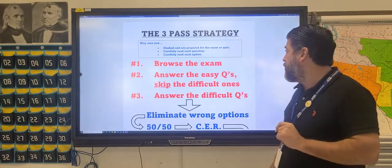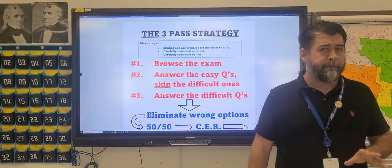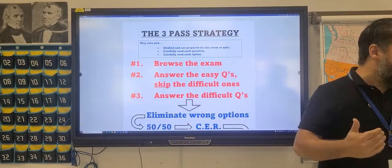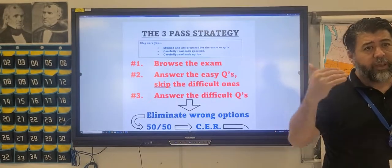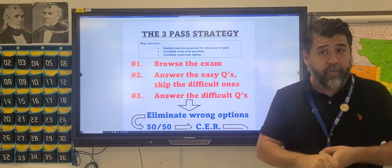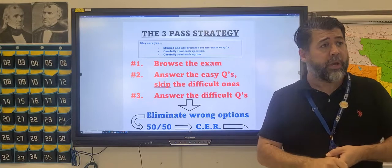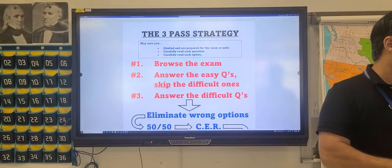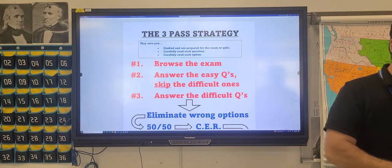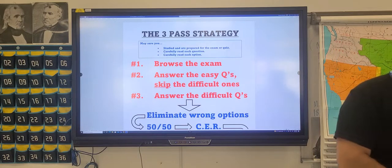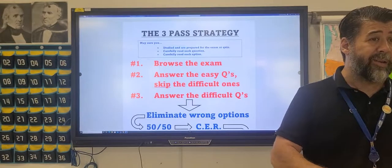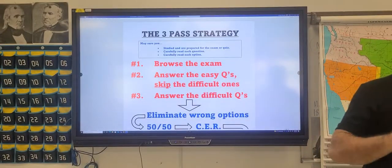So you've got a multiple choice exam in front of you, whether it's paper or computer. Let's talk about the right way to approach this, the three-pass strategy. For any of this to work, for any of these strategies to work, three things have to happen before. First, you prepared for the exam. You did some reading, you did some study. If you come into a test blind, your chances of success are very low.